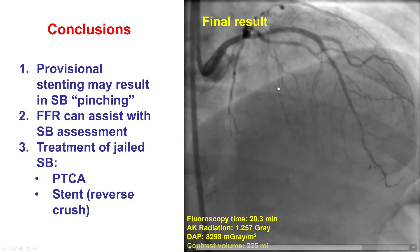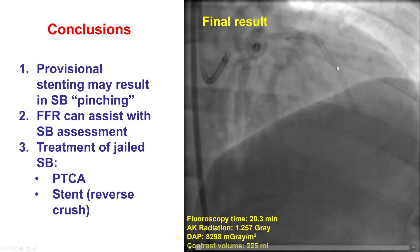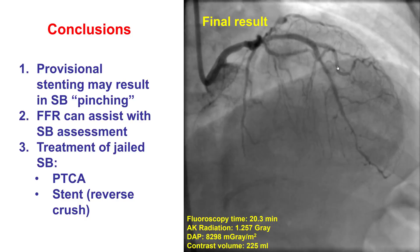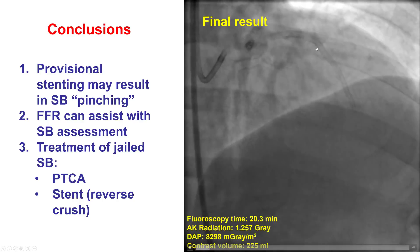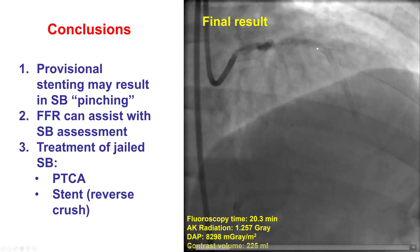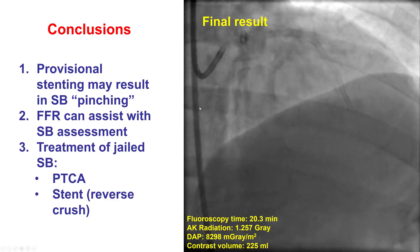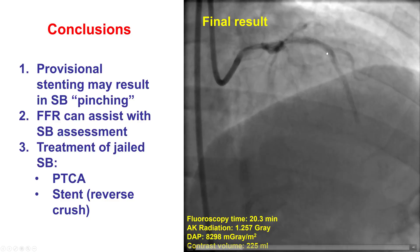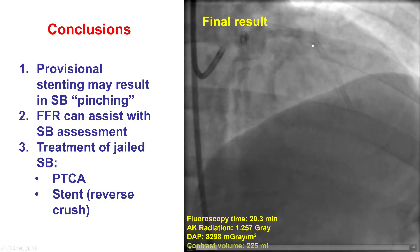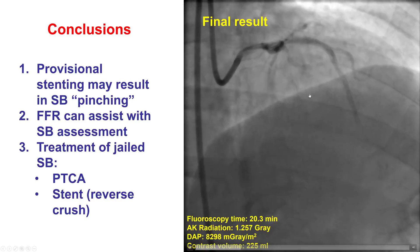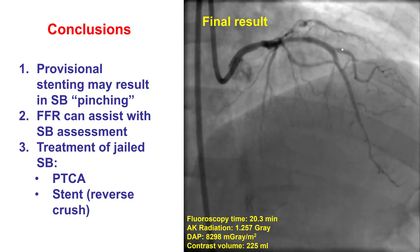There are several potential lessons from this case. First, the provisional strategy, although preferred for the vast majority of bifurcations, carries a risk of pinching or creating significant stenosis or dissection at the origin of the side branch — which is what happened here. If it is not clear that the side branch has significant stenosis, a functional assessment with FFR or IFR can assist in determining hemodynamic significance. If significant, treatment options include balloon angioplasty with POT and final kissing balloon, or placing an additional stent via the reverse crush technique as shown in this case.